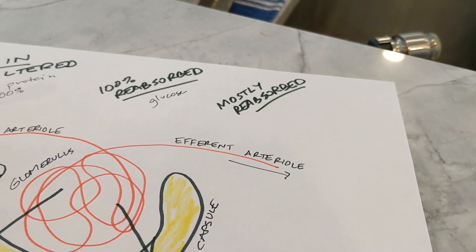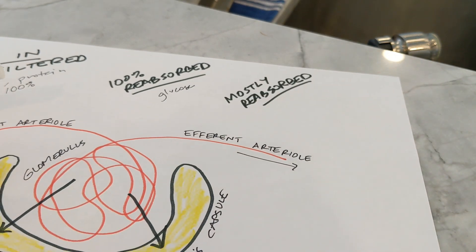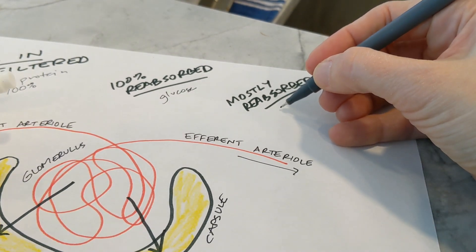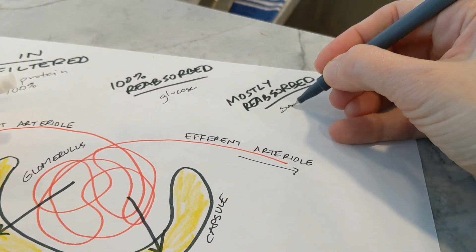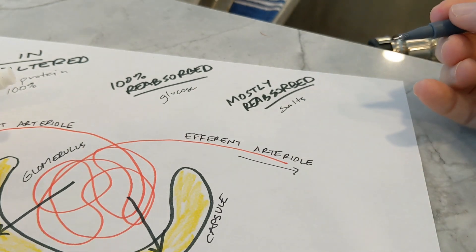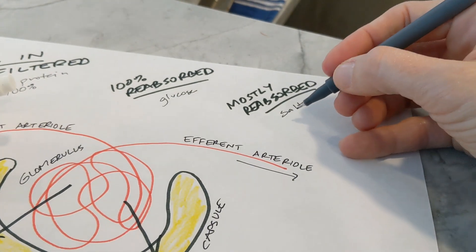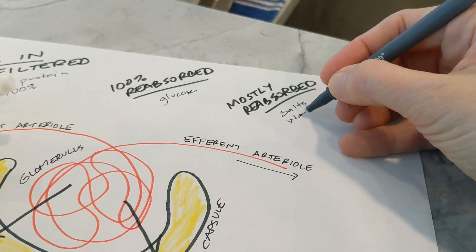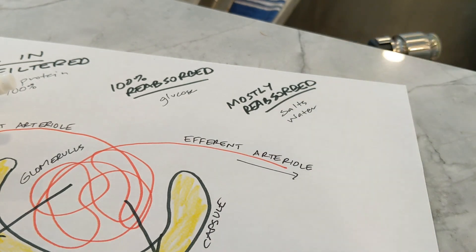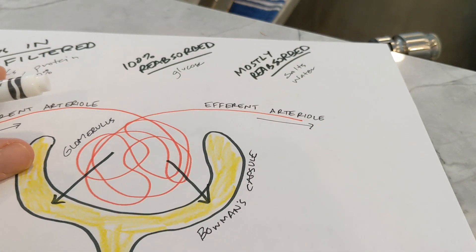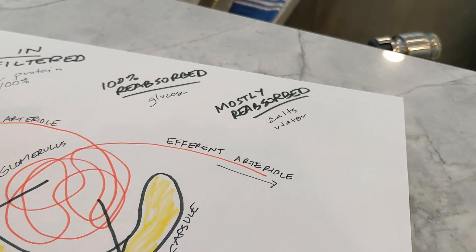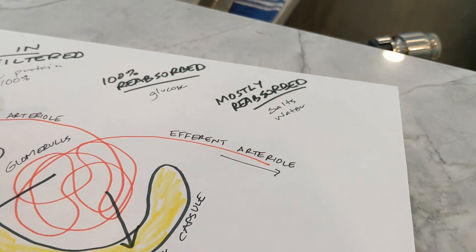There are two other things that are mostly reabsorbed — the vast majority stays in our blood. That includes our salts and electrolytes, which mostly stay in our blood with just a small percent coming out. And water — most of what goes through into Bowman's capsule is going to get reabsorbed right back into our blood so we don't dry out like a raisin.